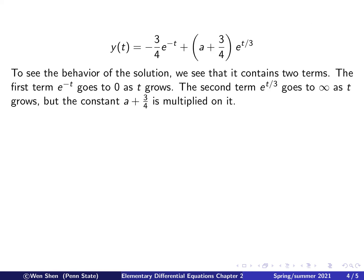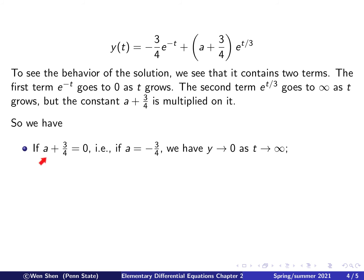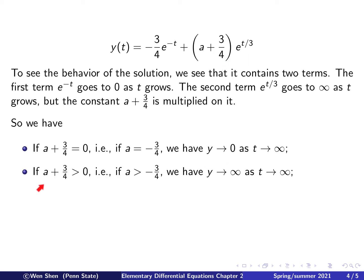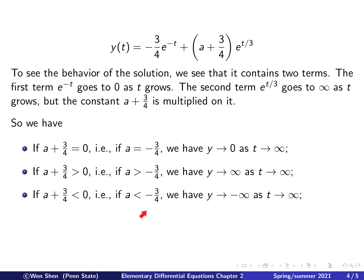To summarize: the first term behaves deterministically, while the second term's behavior depends on the choice of a. If a equals negative 3 over 4, the constant is 0 and the solution goes to 0. If a is bigger than negative 3 over 4, the solution goes to positive infinity as t goes to infinity. If a is less than negative 3 over 4, the solution goes to negative infinity as t goes to infinity.